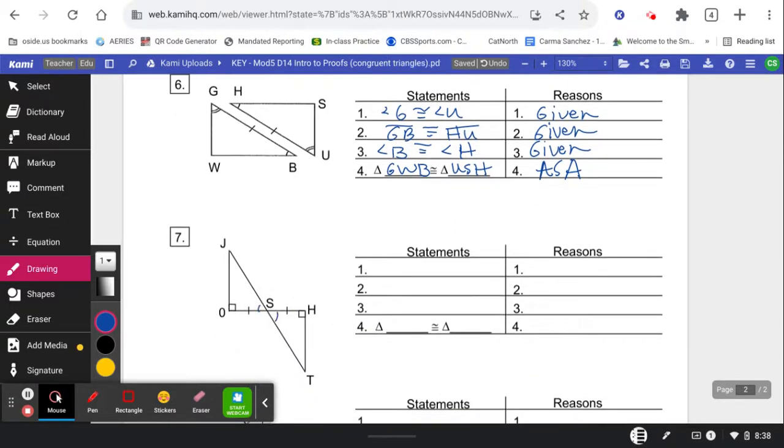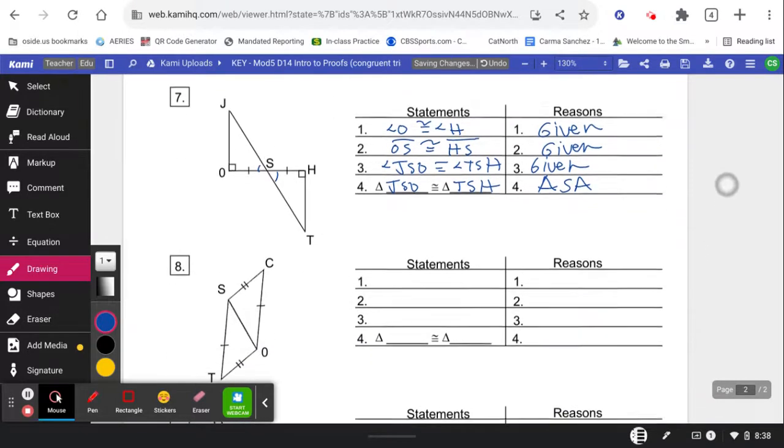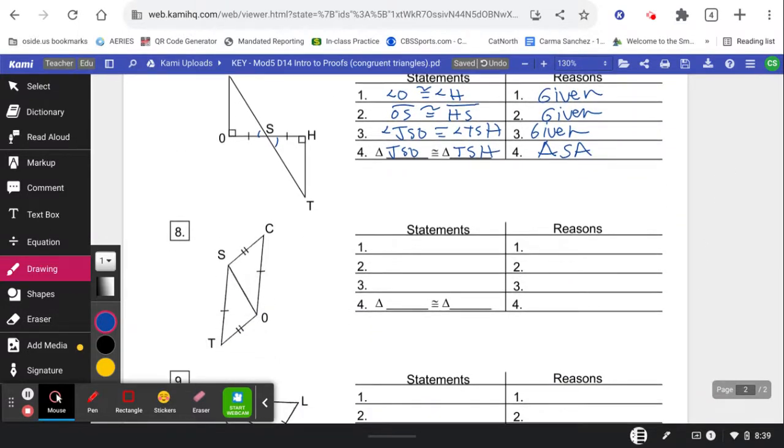Okay, on this other one we also need these vertical angles in order to make the angle side angle true. So we say angle O is congruent to angle H. Side OS is congruent to side HS. And angle JSO is congruent to angle TSH. And so triangle JSO is congruent to triangle TSH by ASA.